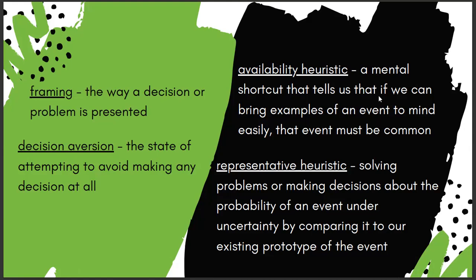Sometimes we have decision aversion — the state of attempting to avoid making any decision at all. This happens when we become overwhelmed with information or don't want the responsibility of making a decision. I feel like this happens most with my husband and I when we can't decide what to eat for dinner. No one wants to make the decision. We avert it because we don't want to make the wrong decision, so we try to put it off on the other person.